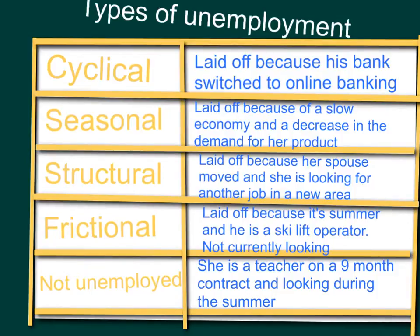In short, cyclical unemployment is because the economy is not doing well and the demand for a product has gone down. Seasonal unemployment is because somebody is working in one season and then doesn't have a job in another season — they're looking for a job in the other season.